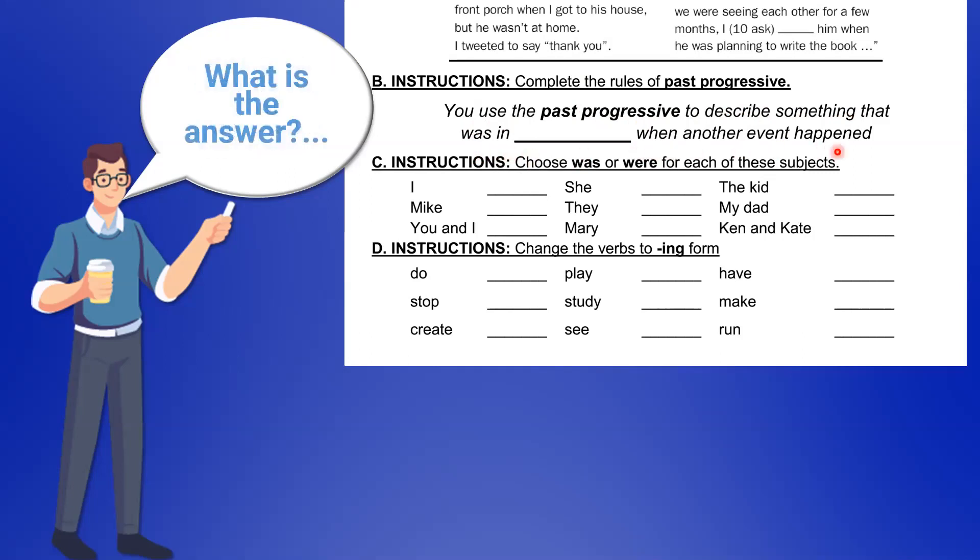What is the answer? That's right, progress. We use past progressive to describe something that was in progress when another event happened.